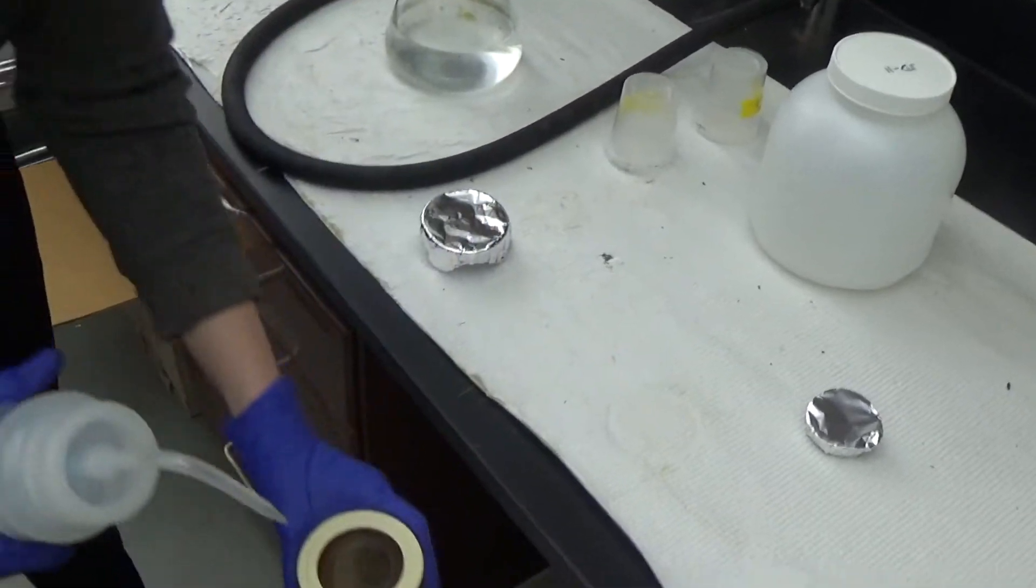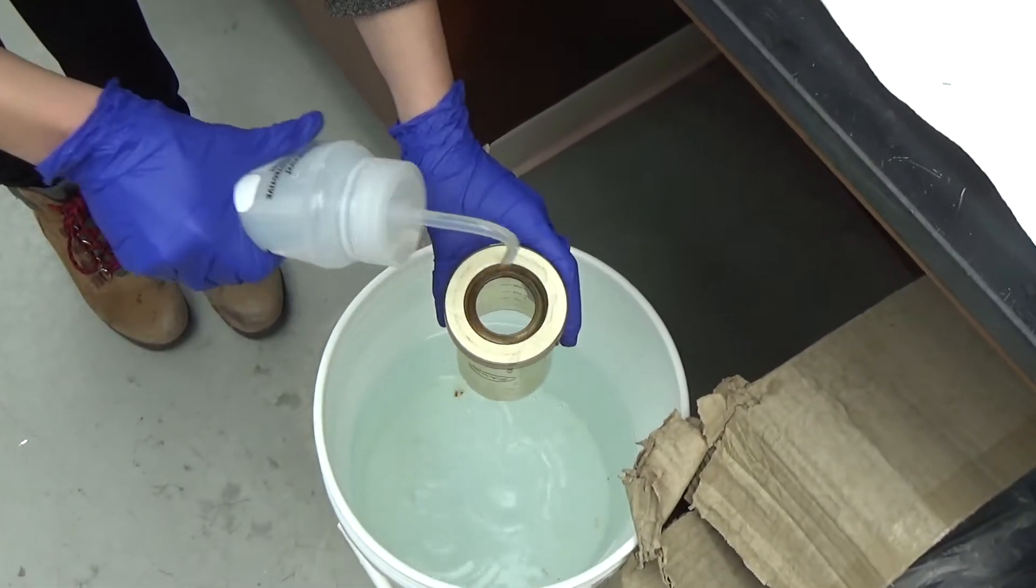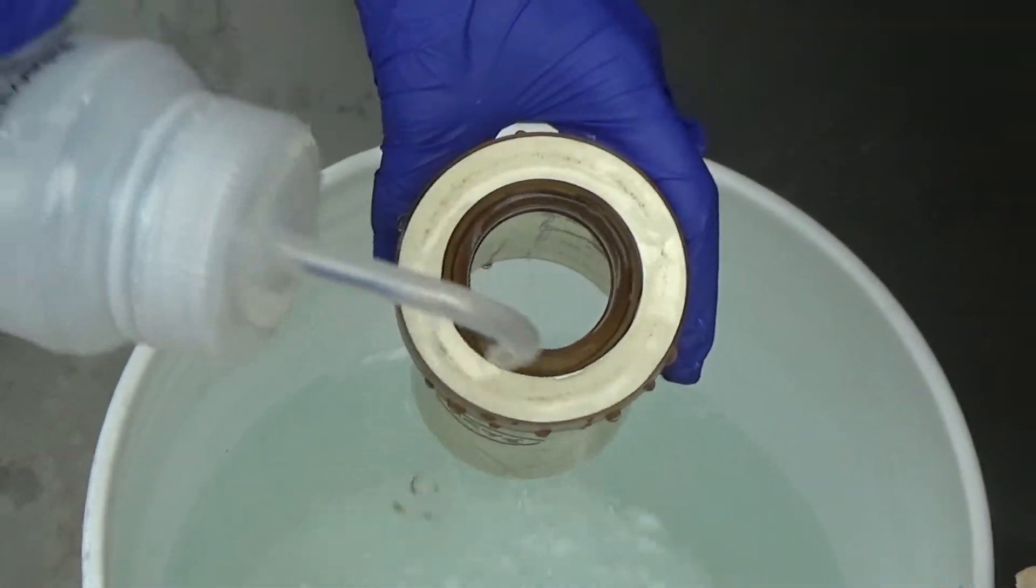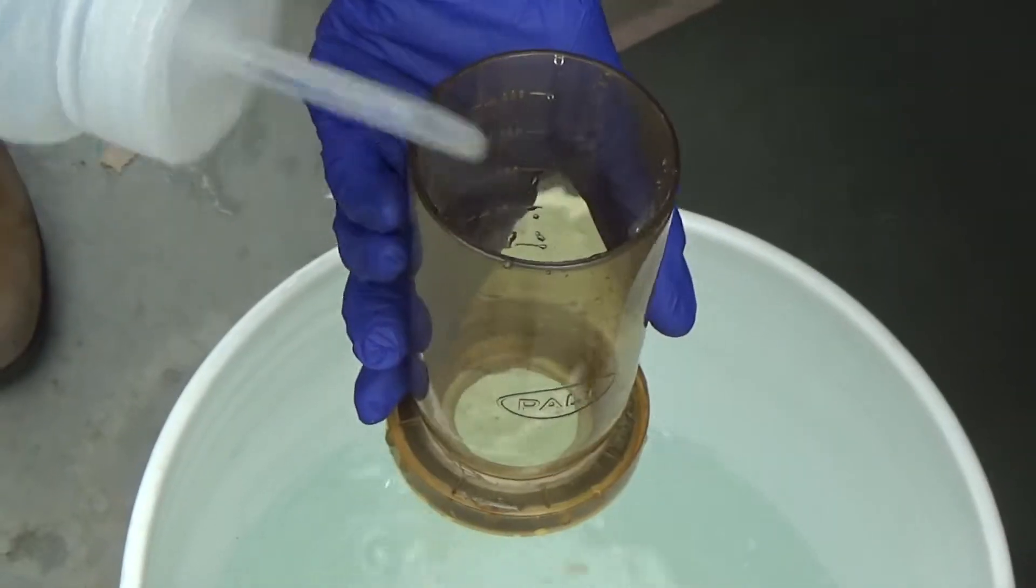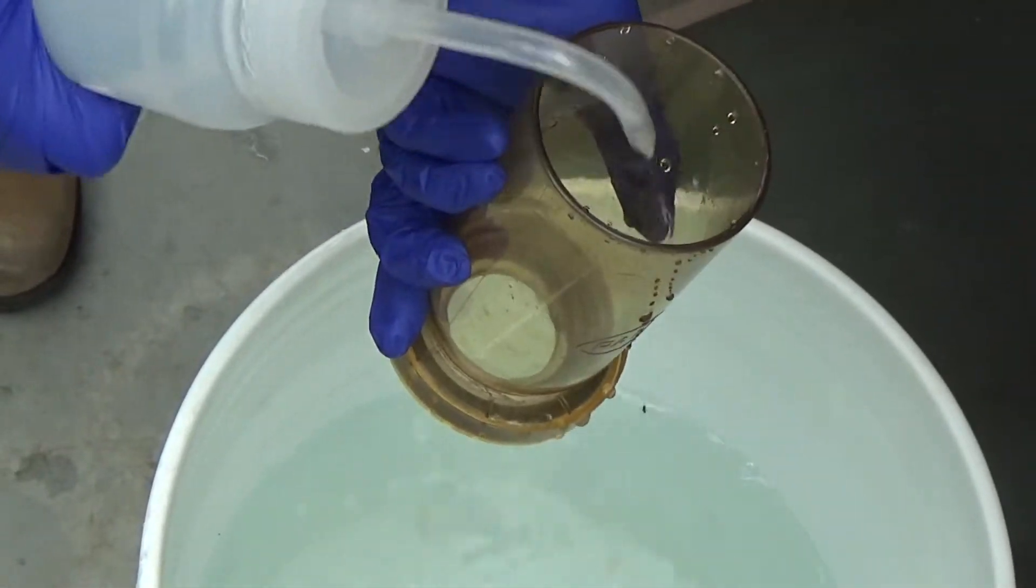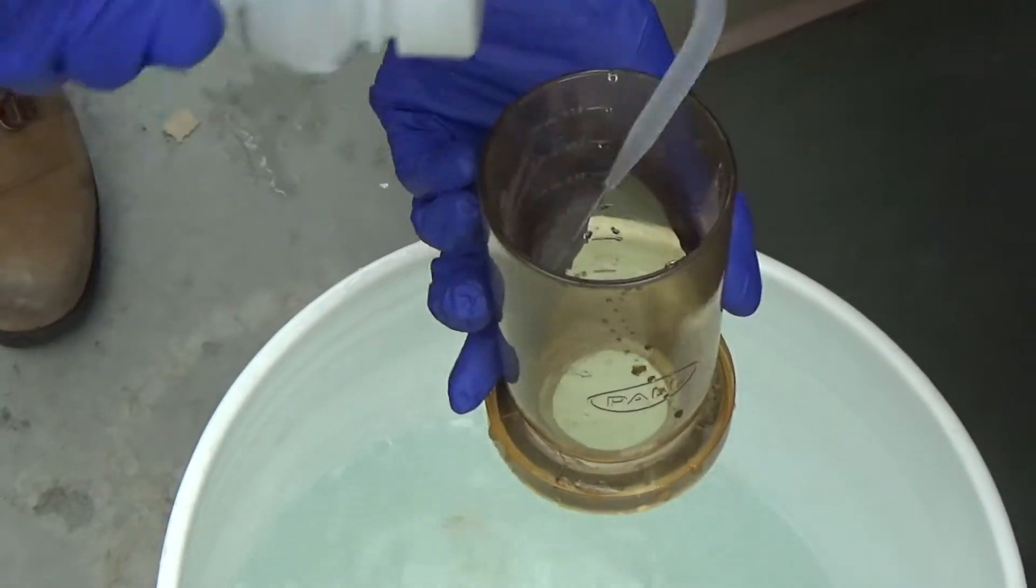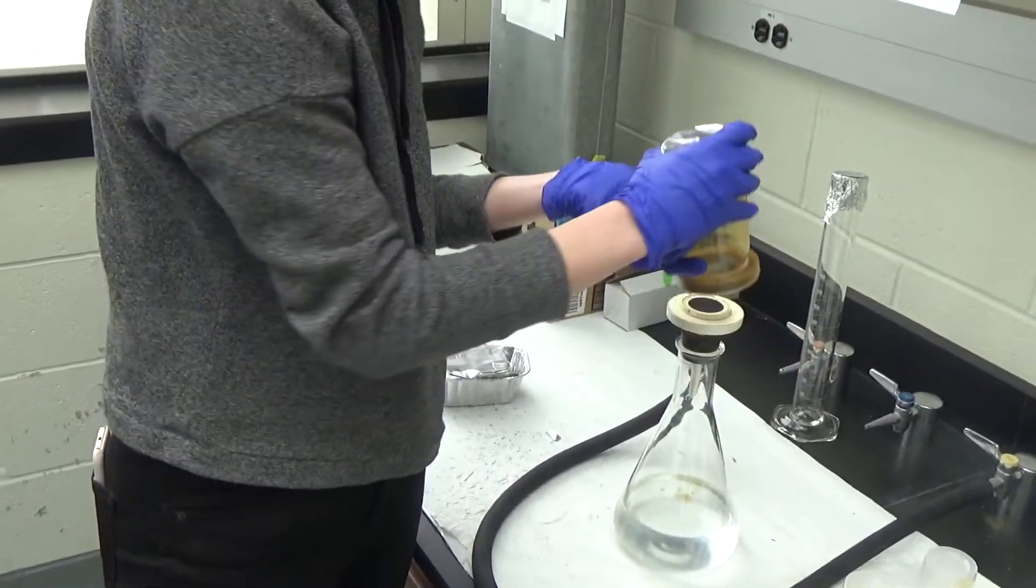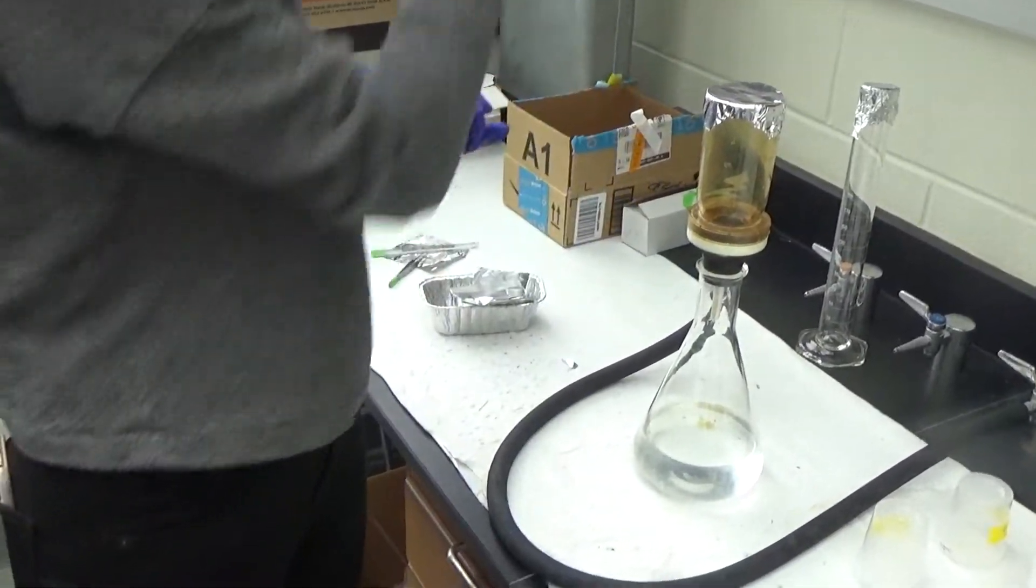Before filtering any new samples, be sure to rinse your filtration cup three times with distilled water. Once your cup has been thoroughly rinsed, place it back on the filter stand with aluminum foil on top.